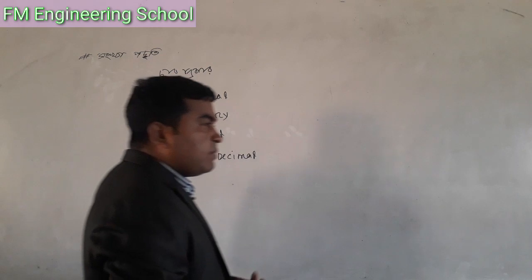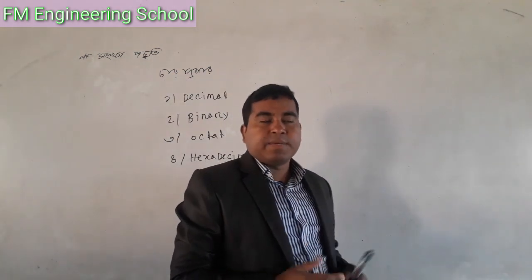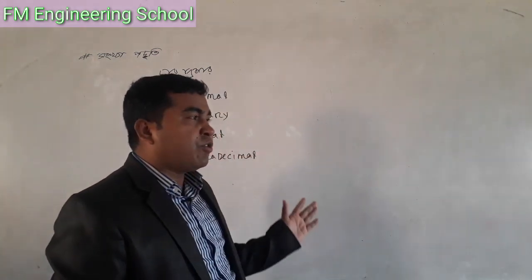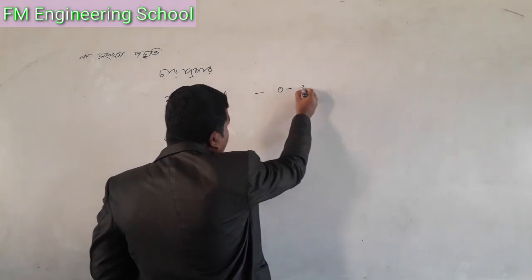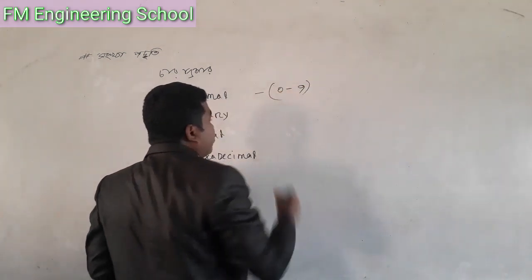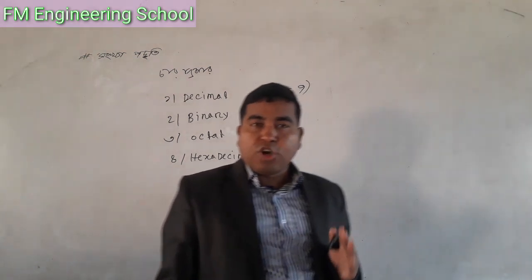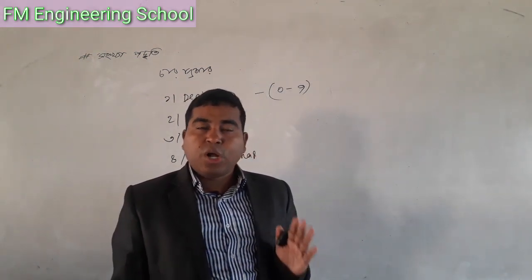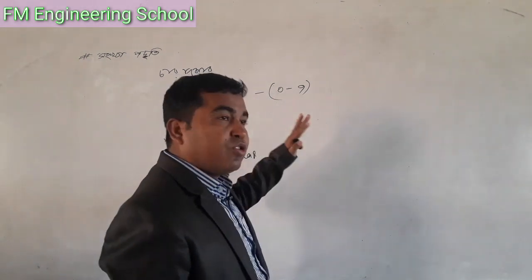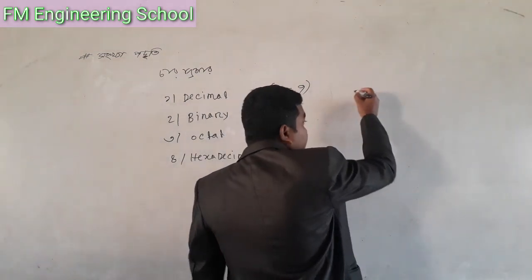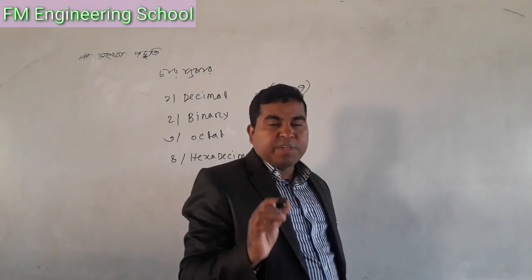Decimal is related to binary, octal, and hexadecimal. The decimal number system has a base of 10. So the decimal number system uses digits 0 to 9, with base 10.